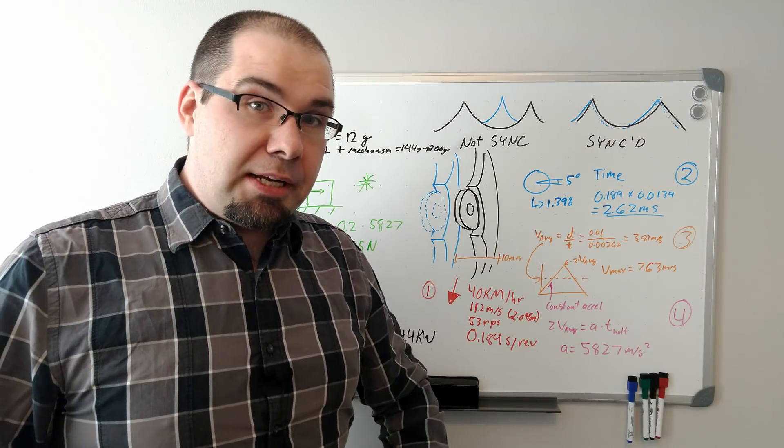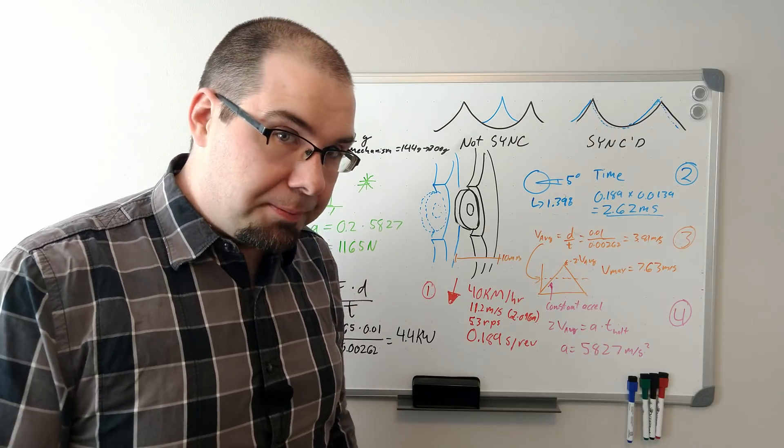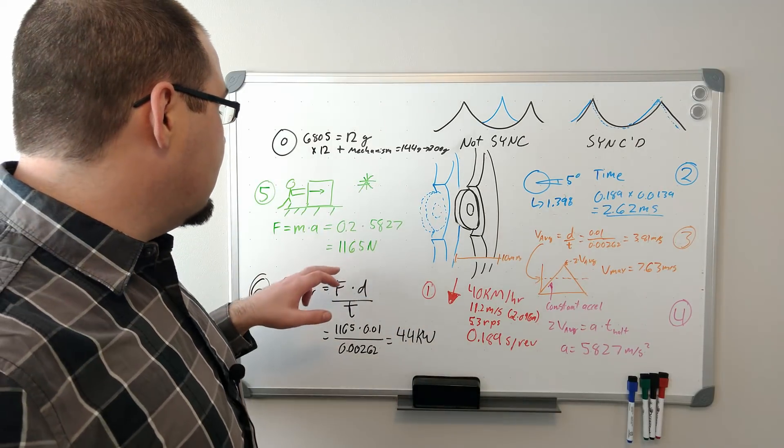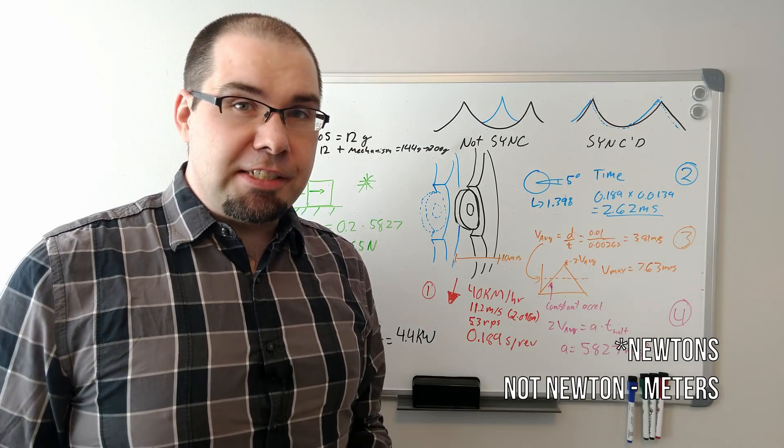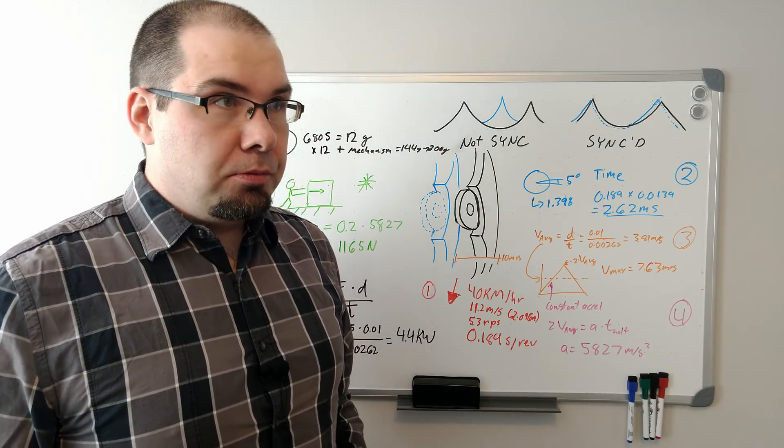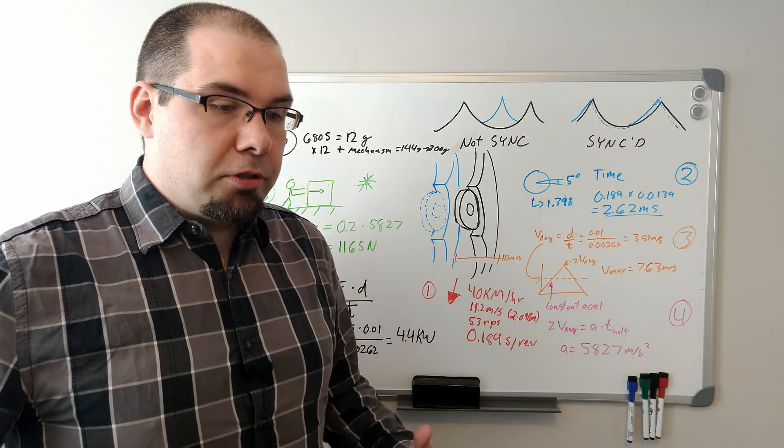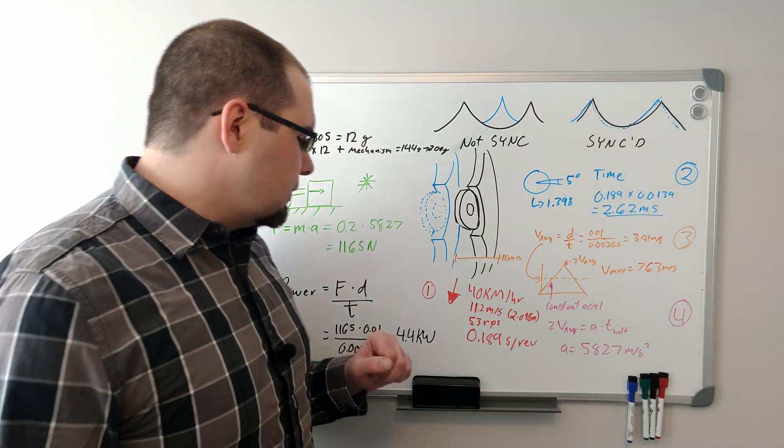So force is mass times acceleration. So if a 100 kilo person is standing on the earth, 9.81 meters per second squared, 981 newtons is holding them down. So in this case we have our acceleration, we have our mass, we need 1165 newtons.